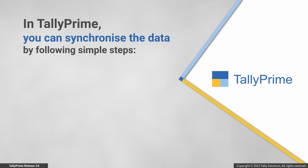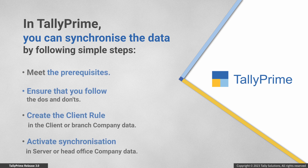As you saw, Tally Prime enables data synchronization in such a way that the company data at your head office or client office gets updated as needed. All you need to do is ensure that the prerequisites are met, follow some basic dos and don'ts, and create the client rule in the client or branch company data and activate synchronization in the head office — or vice versa — as per the nature of rules created for synchronization.